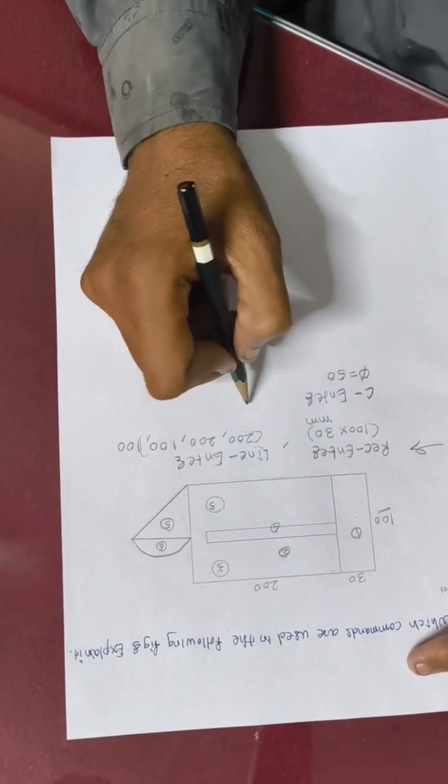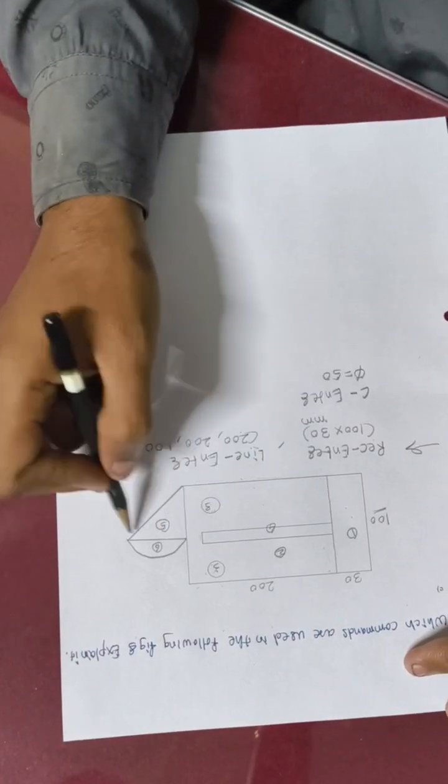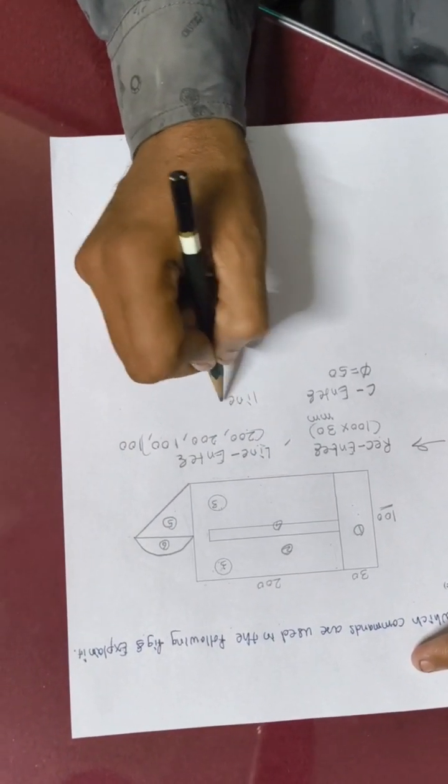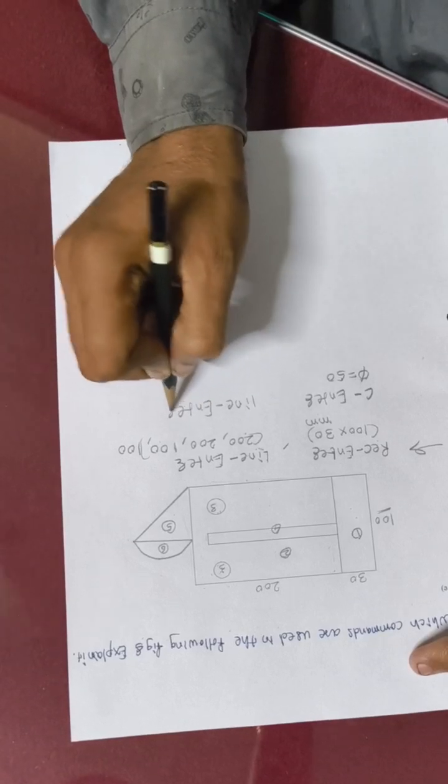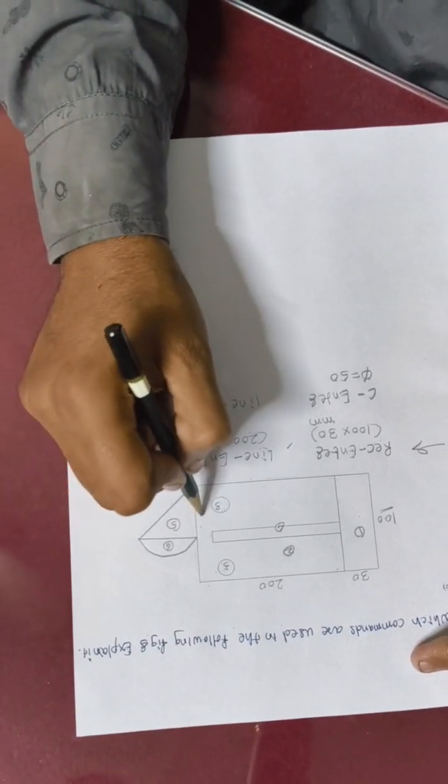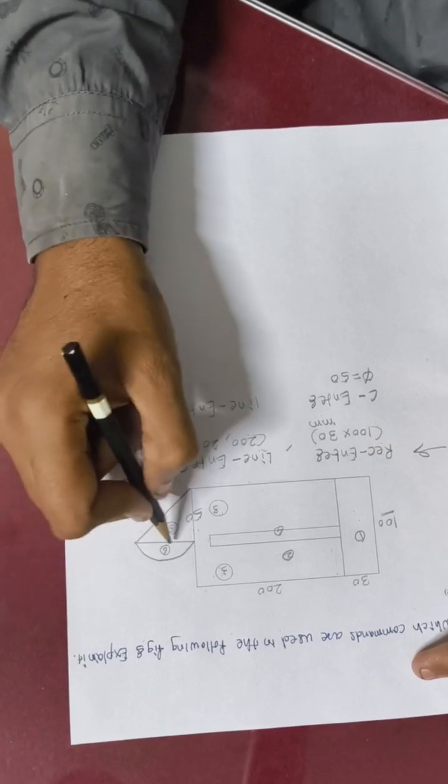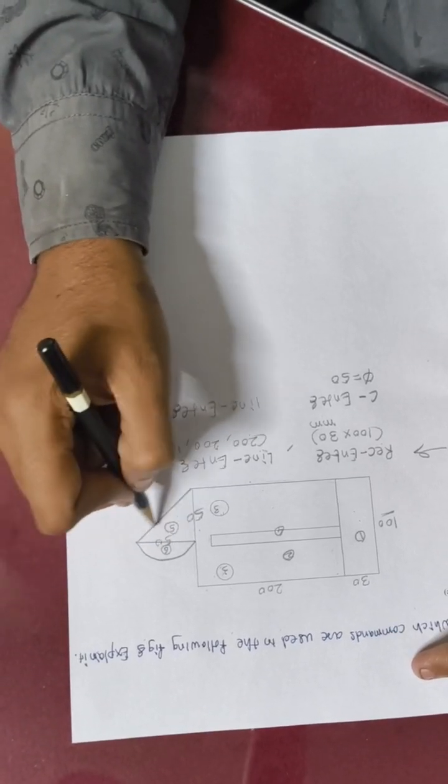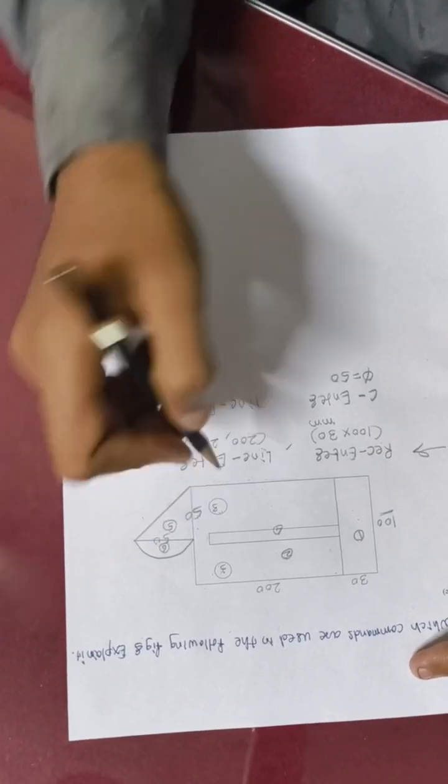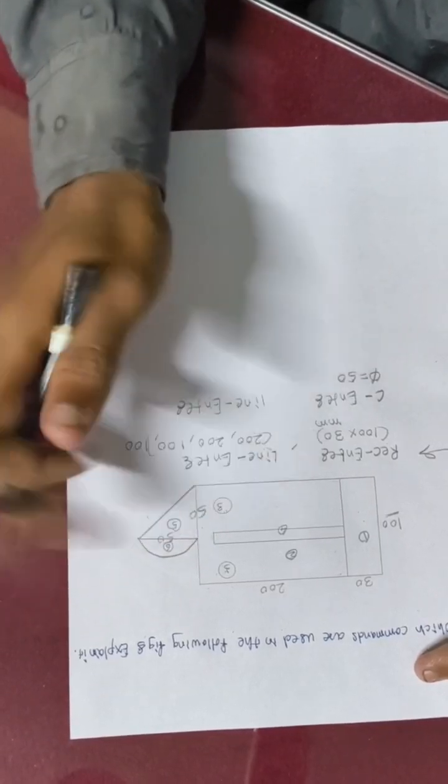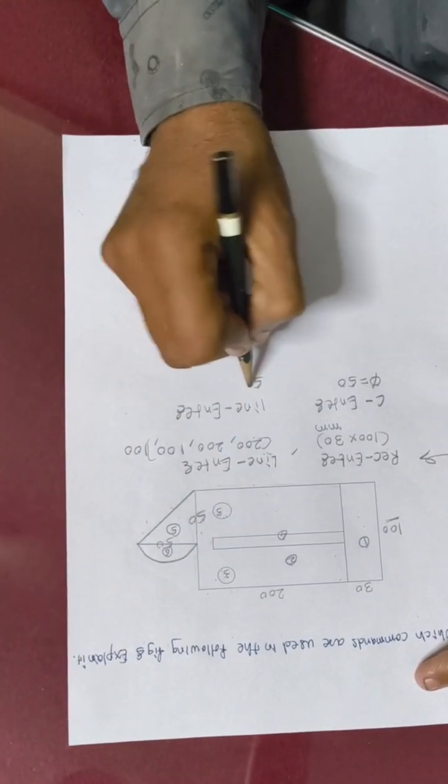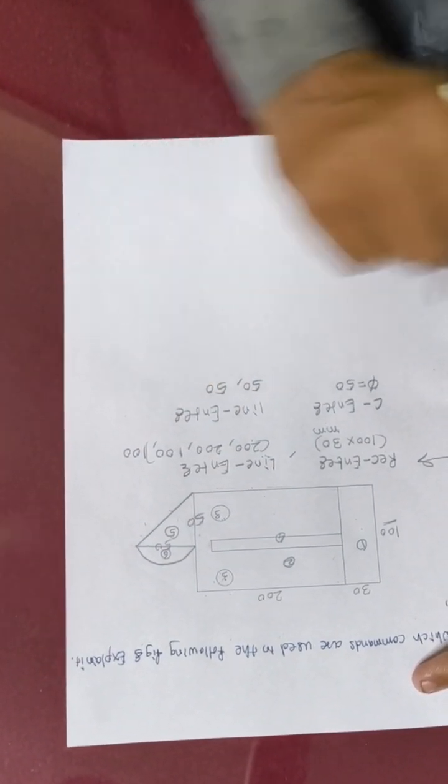Third is a triangle. We can create this triangle with the help of line command: L enter. This dimension may be 50mm, and this dimension is again 50mm. This is the hypotenuse. By the help of Pythagoras theorem, we can determine this. 50 is the length, and 50 is the height.